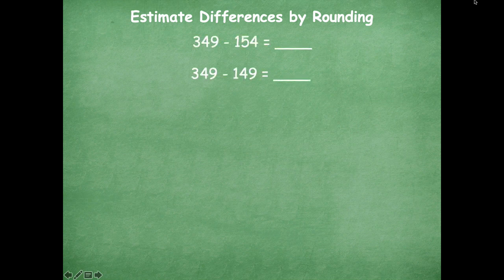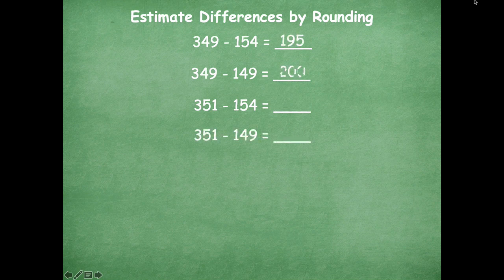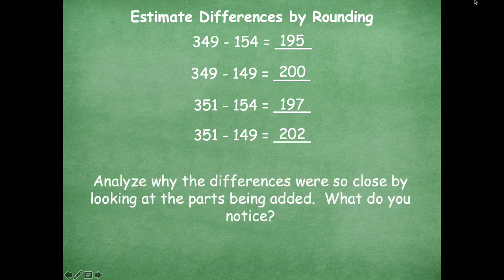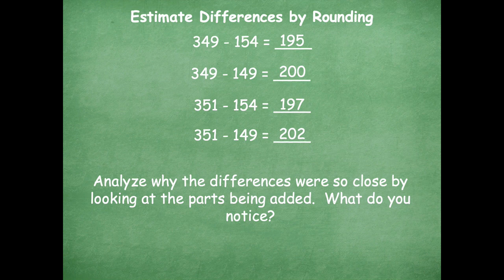Let's look at some differences here. I have a couple of different problems and I want you to notice and analyze why the differences were so close. All of my differences were pretty close: 195, 200, 197, 202 — all really close. All of the parts were close to each other, near that 350 and 150 mark. These would definitely be good ones to round to the nearest 50 to find a really close estimate.